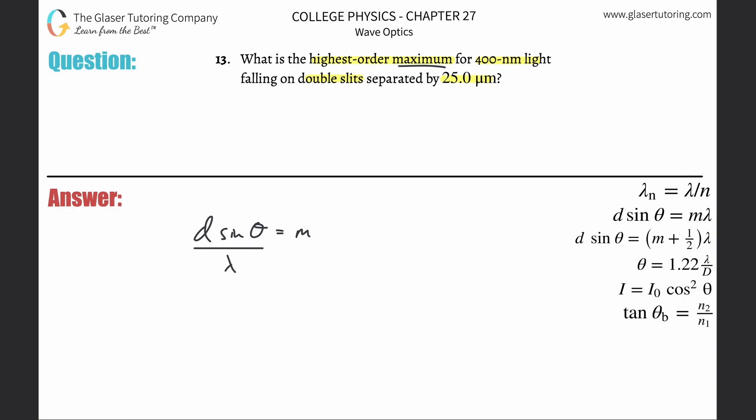That'll give me the maximum m value. So this is going to be the distance between the slits — they told us it was 25 micrometers, so that's 25 times 10 to the minus 6 — multiplied by sine of 90, divided by the wavelength of 400 nanometers, which is 400 times 10 to the minus 9. So 25 times 10 to the minus 6 times sine of 90, divide that all by 400 times 10 to the minus 9, and we get 62.5. That's equal to m.